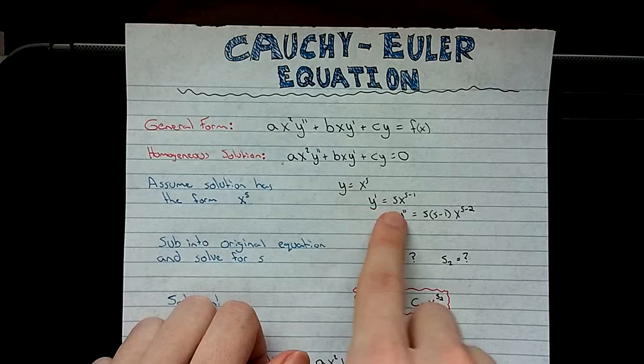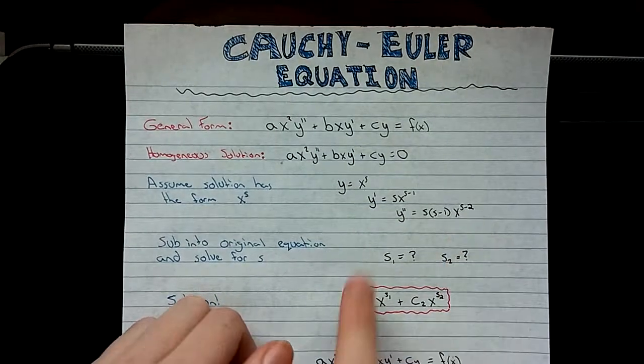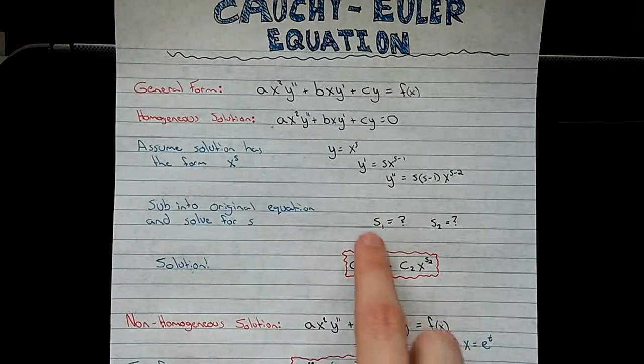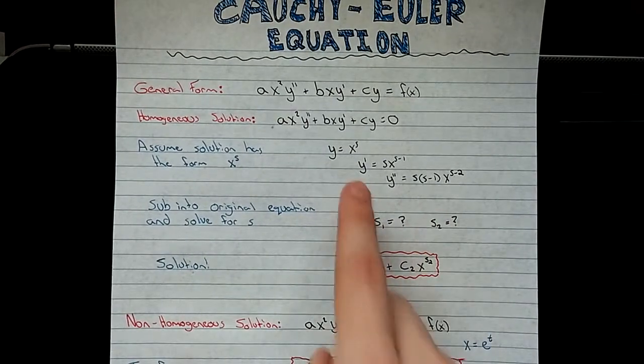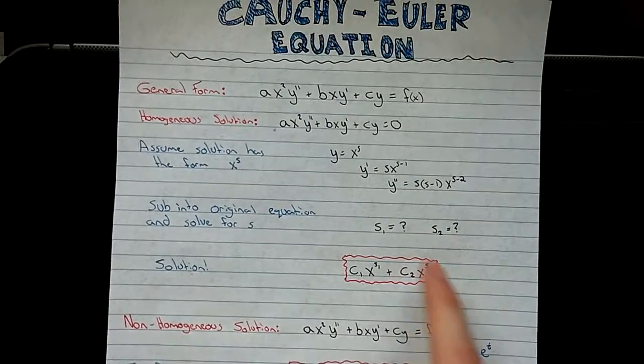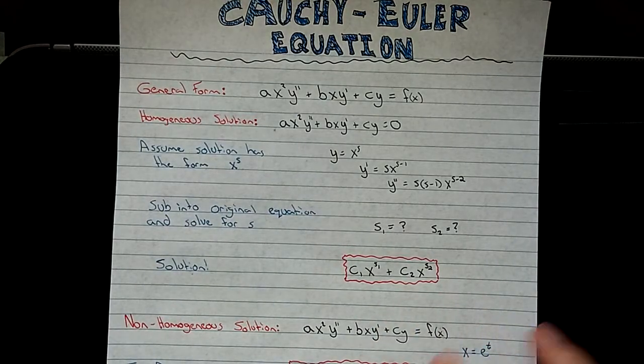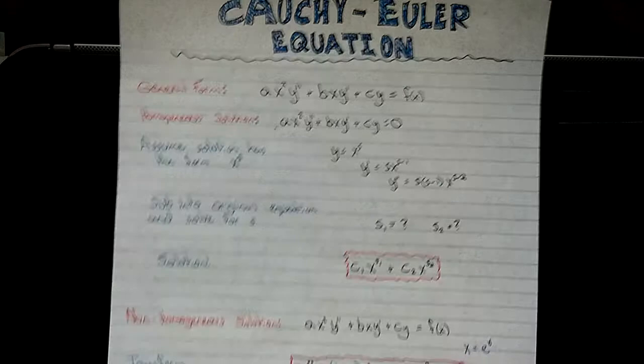So you take your two derivatives here, y prime and y double prime, and you're going to sub those into the original equation. And that will give you s1, s2. It'll reduce itself out into a quadratic equation, and you can just solve that the way you would any quadratic.